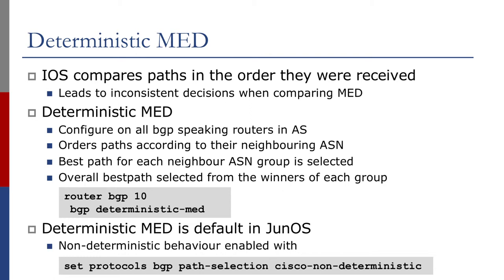The solution to all this is what's called deterministic MED. The recommendation today is to configure this on all BGP speaking routers in the autonomous system. We order the paths according to the neighboring AS number, starting with the lowest AS number up to the largest. We calculate the best path — the best MED, lowest metric — for each neighbor ASN group, and then compare all of these to get a winner. This ensures we always get the best path when there are multiple links between neighboring autonomous systems. The Cisco IOS configuration command is 'bgp deterministic-med'.